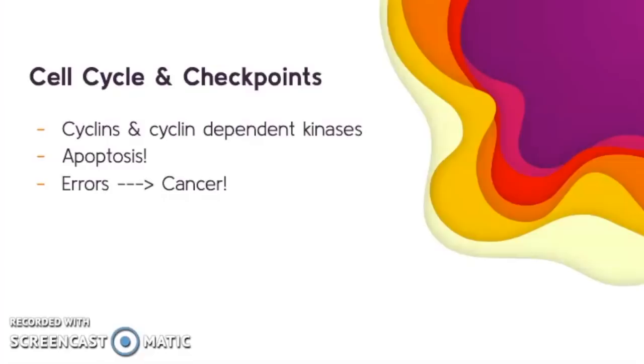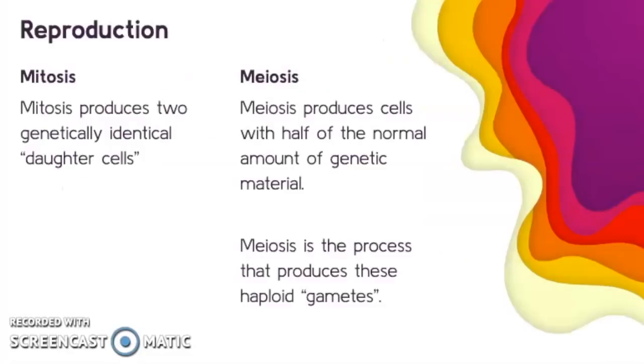If we're looking at the cell cycle and checkpoints, a number of internal controls or checkpoints regulate progression through the cell cycle. Interactions between cyclins and cyclin-dependent kinases control the cell cycle. If something is wrong, if an error is detected, apoptosis generally occurs, which is programmed cell death. But errors in this particular cycle could also lead to disease like cancer, where we have uncontrolled cell division, unregulated cell division.